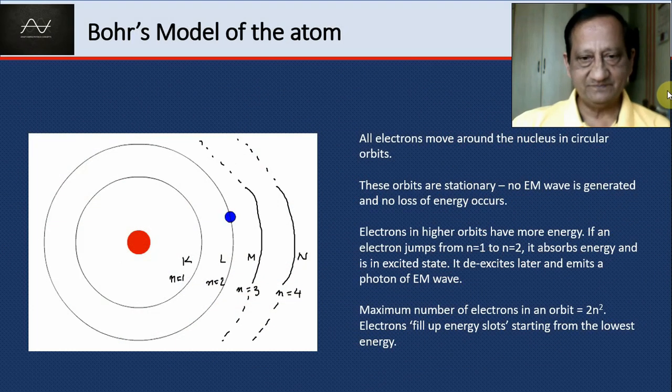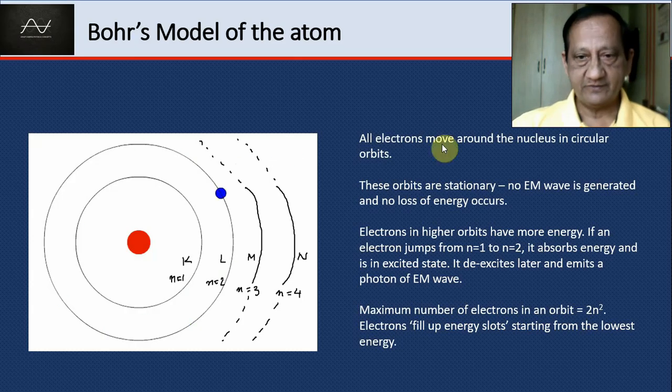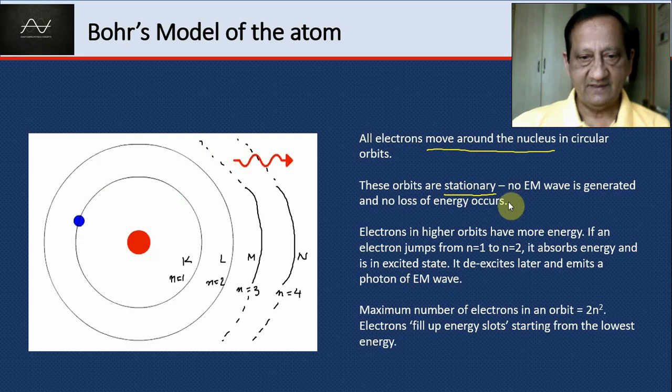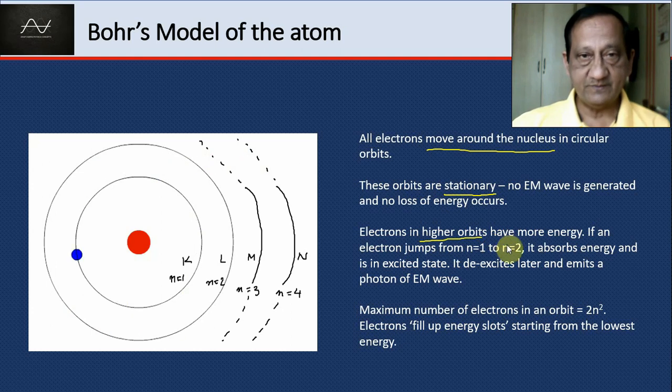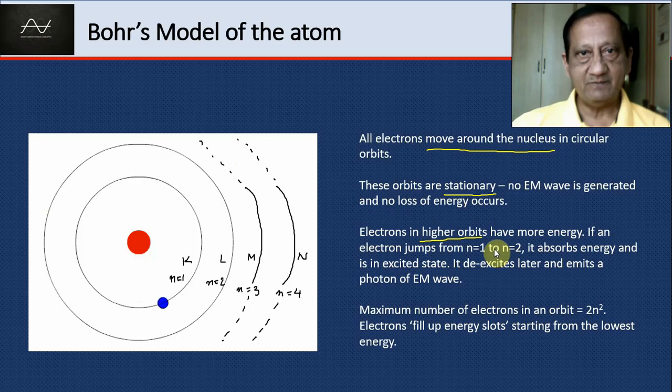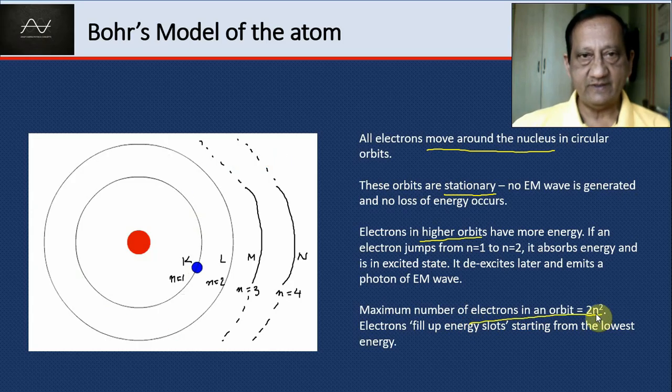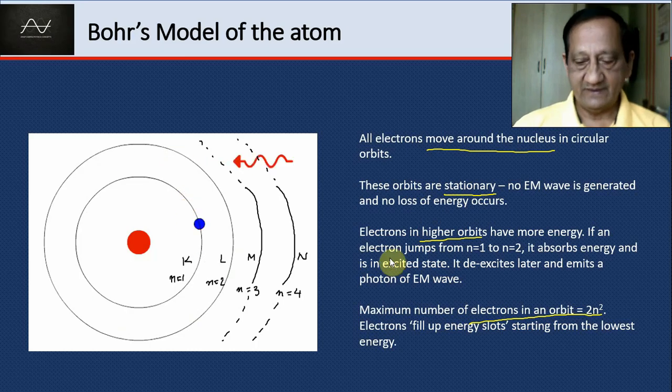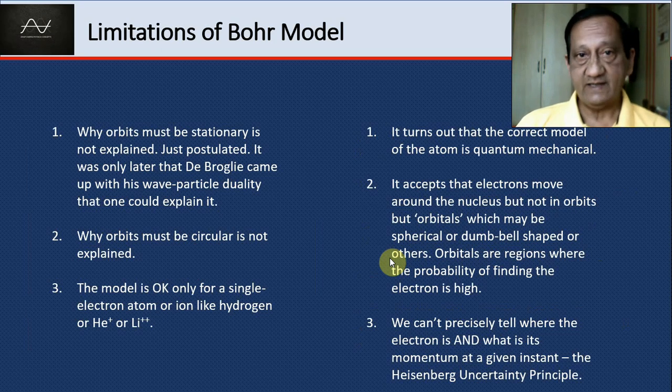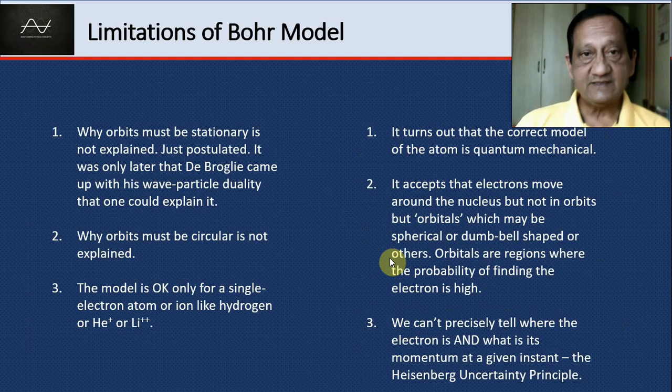Continuing with the Bohr model, all electrons move around the nucleus in circular orbits. These orbits are stationary—they don't lose energy, and the electron doesn't crash onto the nucleus. Electrons in higher orbits have more energy. If it absorbs energy from a lower orbit, it jumps to a higher orbit. If it de-excites, it releases energy in the form of an EM wave and goes back to a lower energy level. Maximum number of electrons in an orbit is 2n squared where n is the orbit number. We saw the limitations and that the correct model is quantum mechanical with Heisenberg's uncertainty principle.